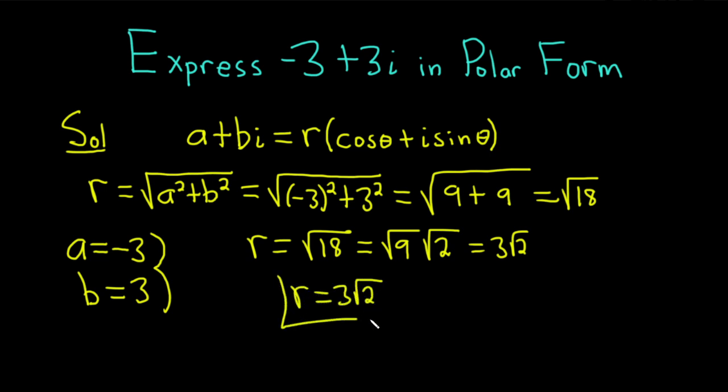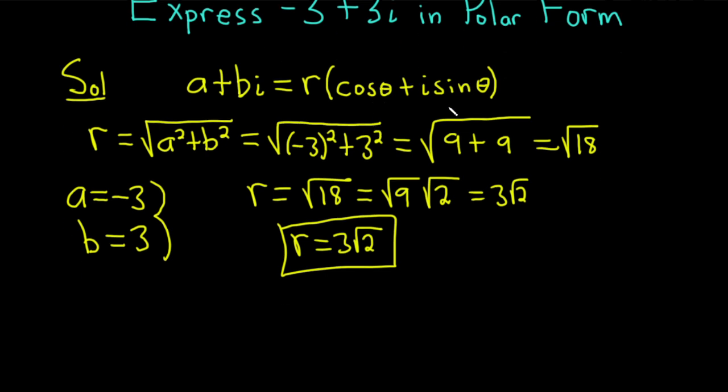I'm going to put that in a box because that's important. So r is called the modulus of the complex number. It's the distance between the complex number and the origin in the complex plane. Now we have to find theta for our formula. So what I like to do is I like to write down our actual complex number again. So negative 3 plus 3i.